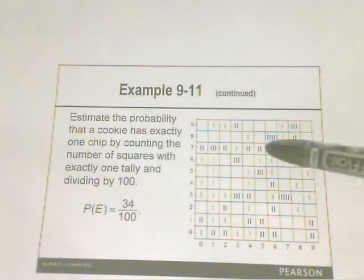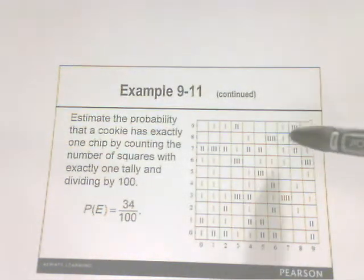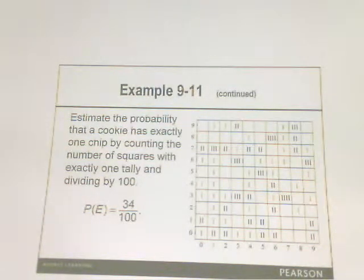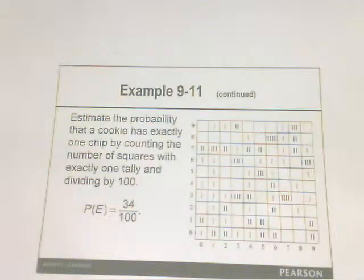So from this 10 by 10 grid, if you take the time to count this, you'll see that there are exactly 34 of these squares that have exactly one tally in it. So the probability of event E happening would be 34 out of 100.